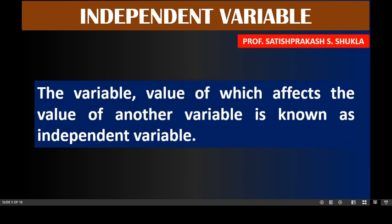The variable whose value affects the value of another variable is known as independent variable. Independent variable tends to affect the value of another variable. In the given situation, the value of independent variable remains unchanged, remains stable. In this context, the independent variable is also called absolute variable.